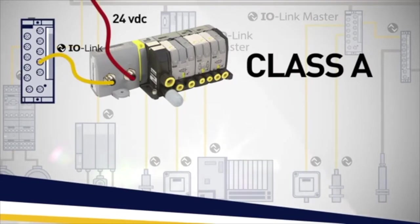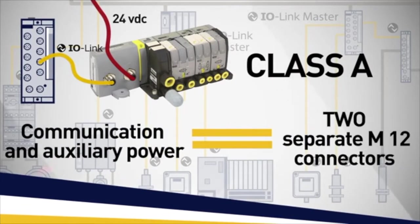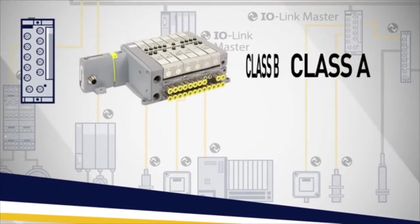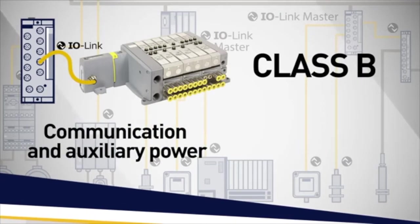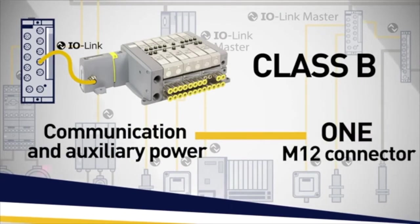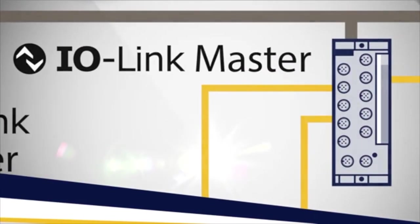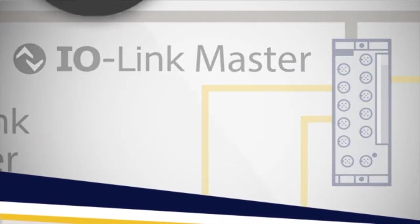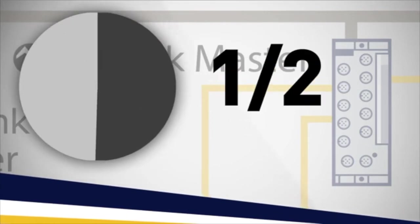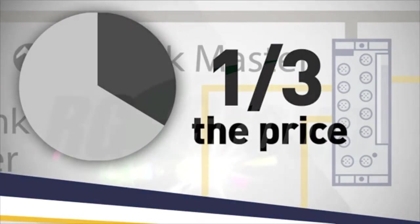Class A, communication and auxiliary power are supplied through two separate M12 connectors. Class B, communication and auxiliary power are supplied through one M12 connector. And we can just connect onto those free IO-Link master ports to get our valve on the network at half or a third of the price of a node.